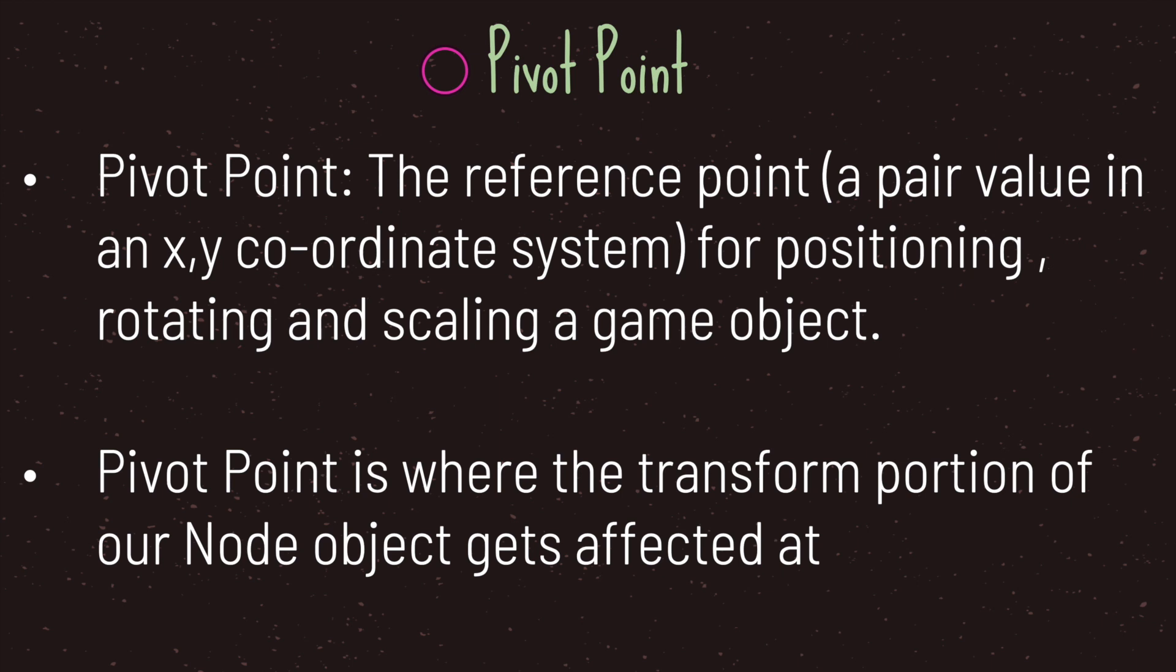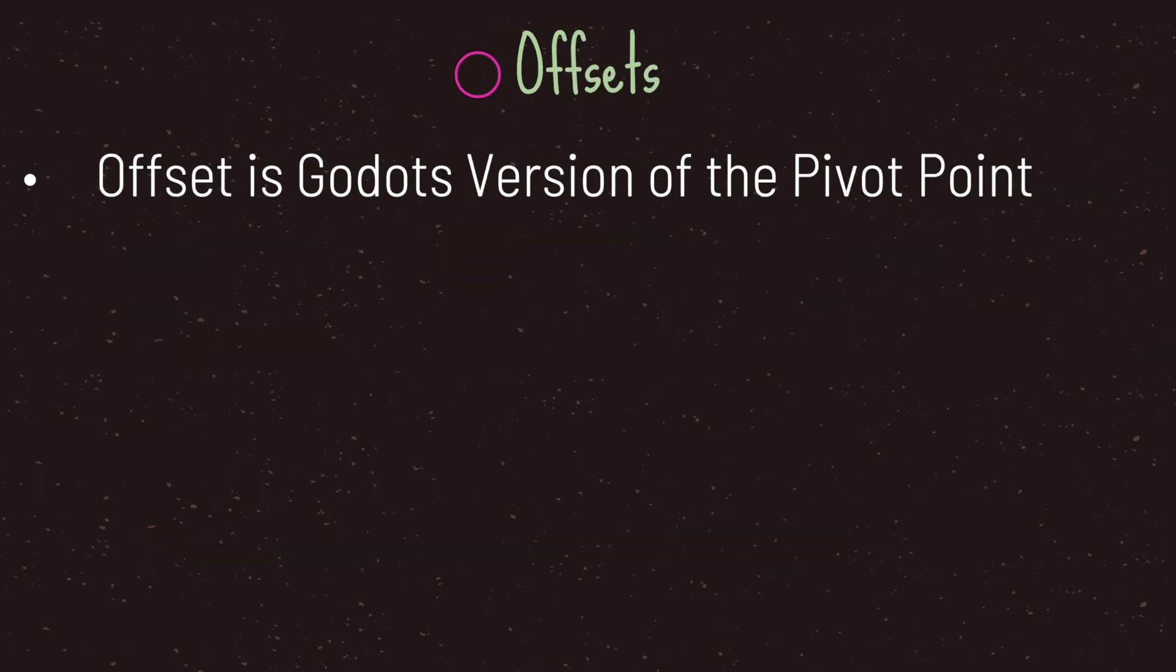The easiest way to think of a pivot point is just the reference point at which our transform portion of our node object will get affected at. And of course offset is the name that Godot uses to refer to the pivot point.